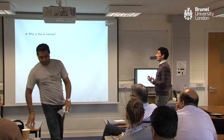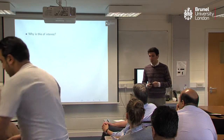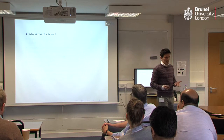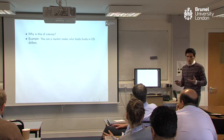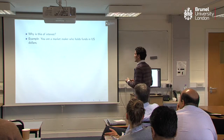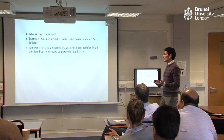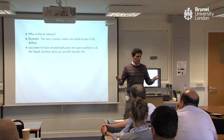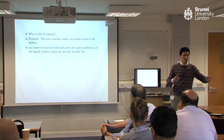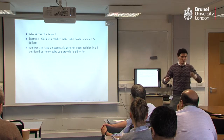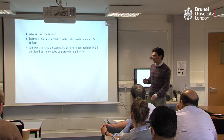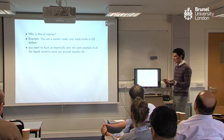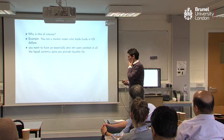Why is this of interest? I have a very special example, partially driven by interest in the industry. Suppose you are a market maker holding US dollars and you want essentially a zero net exposure. You want to invest some money in New Zealand dollars, and then go short the same dollar amount in Swiss franc and so on — that's what I mean by zero net open position.